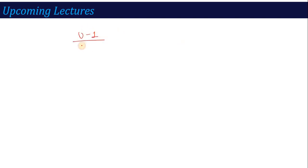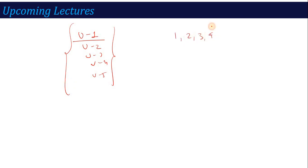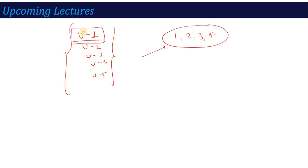In upcoming lectures I will cover this subject unit by unit: Unit 1, then Unit 2, Unit 3, Unit 4, and finally Unit 5. Units 1 through 4 are the most important — practice as much as you can. In my lectures I will solve one or two problems with you, but beyond that refer to the Proakis textbook and solve problems yourself. The more you practice, the more marks you will secure and the more your confidence will grow. Let's start from Unit 1 in the next lecture — thank you.